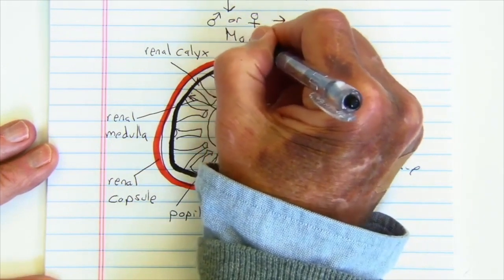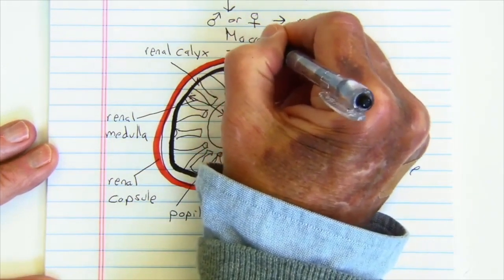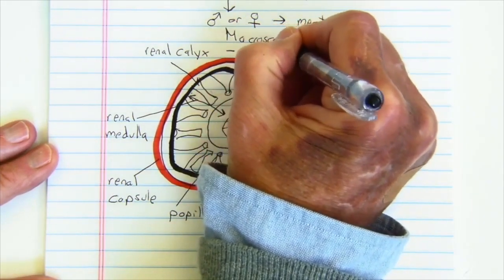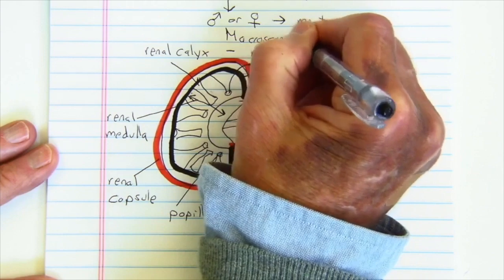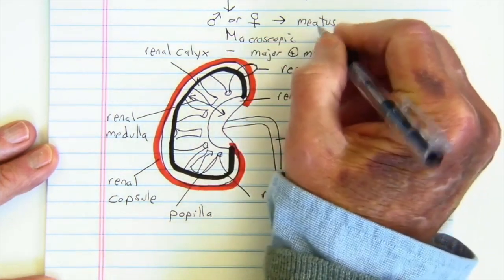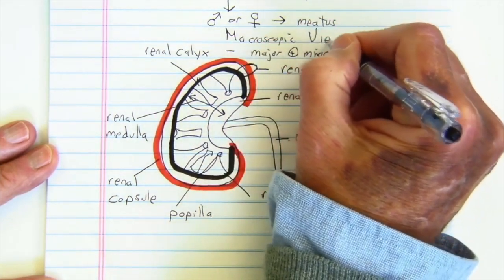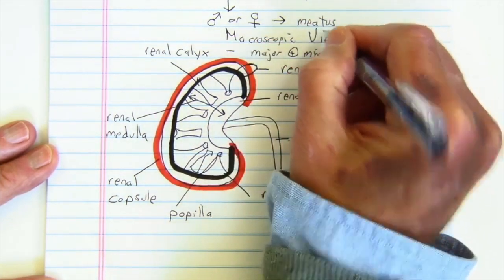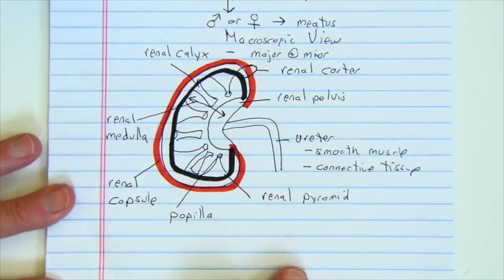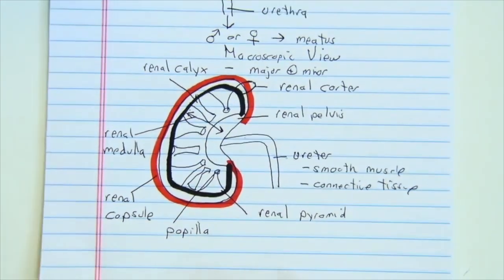This is what I would call a macroscopic view — macro means giant — so it's really looking at this with the naked eye without the use of a microscope.